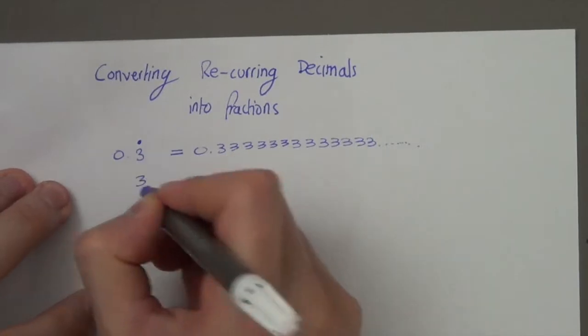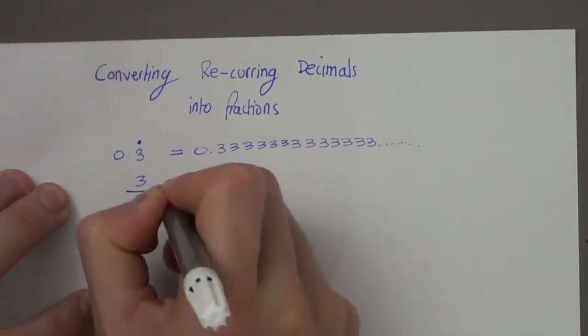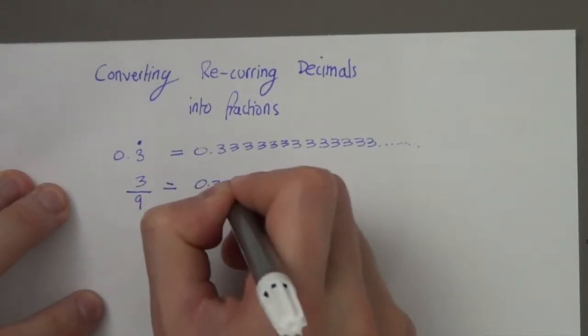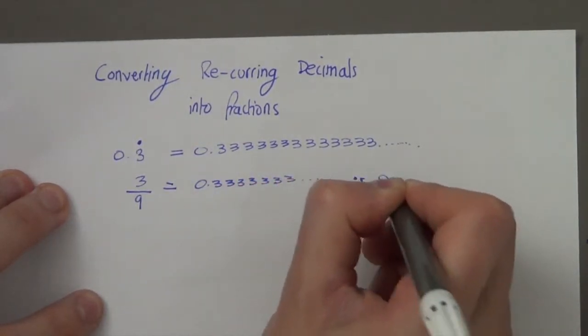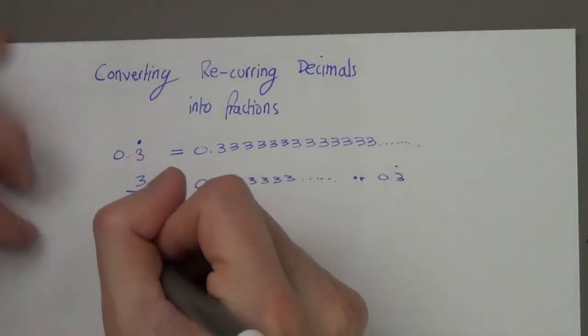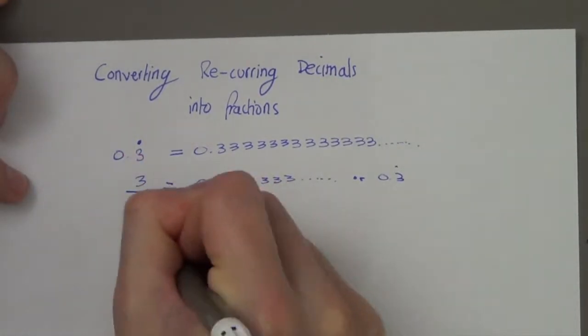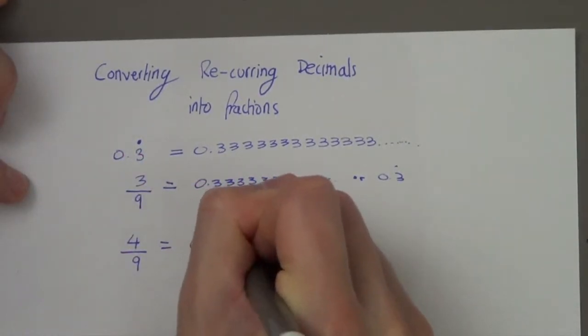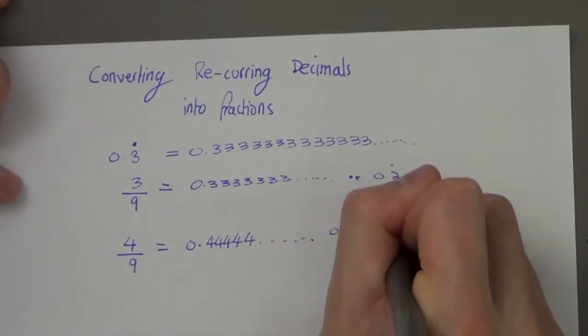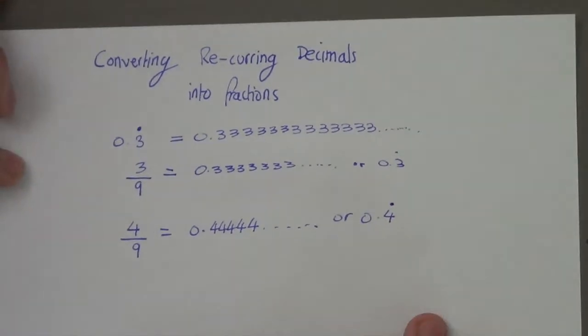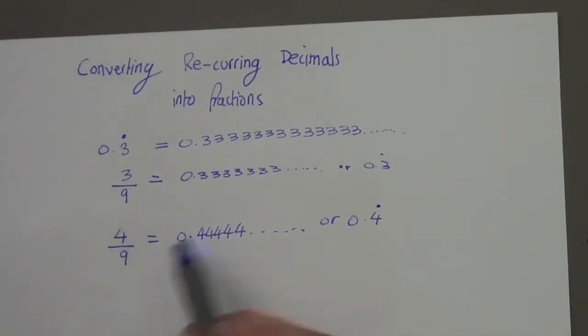Now, if you did 3 over 9 on your calculator, you would get the same result. And if you did 4 over 9, you would also get the same result. So it's quite a good idea to remember anything over 9 is basically 0 point that number recurring.